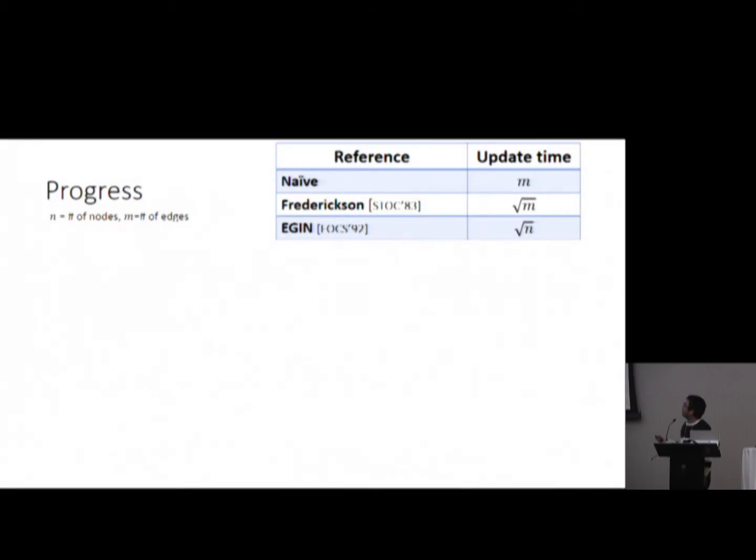Let's see the progress on this important problem. There is a naive way to deal with this. Basically, you just recompute everything after every update in time linear. But this is not what we want. The first non-trivial algorithm is by Fredericksen from 1983. He has square root m update time. And then Eppstein et al. improved it into square root n. And this bound stood for a long time. But people can improve it for some cases.